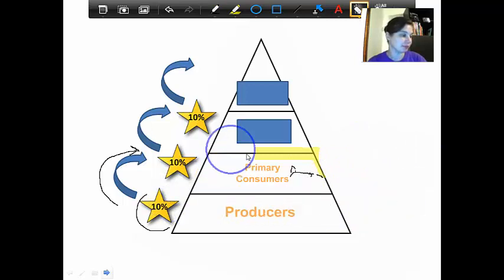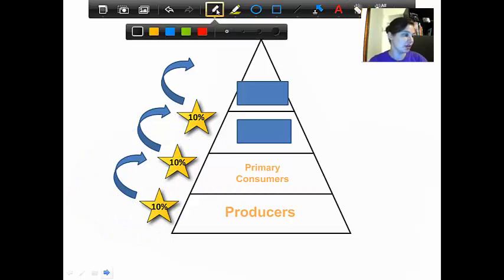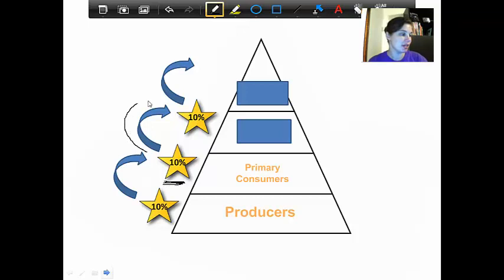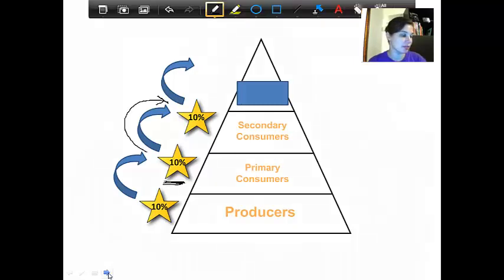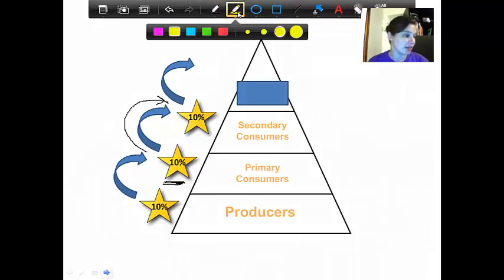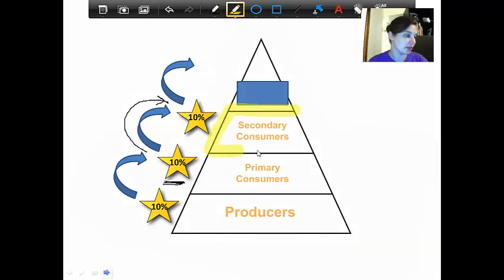Let's look at the next level. You can see over here on the side where the stars are, again only 10% of the energy from the primary consumers is passed on to the next level again. So that level is getting smaller in its amount of energy. That level up there, as I'm sure you can guess again, is our secondary consumers. Check out the size. This rectangle is smaller than the one below it, than the primary consumers, and considerably smaller than the producers down at the bottom.